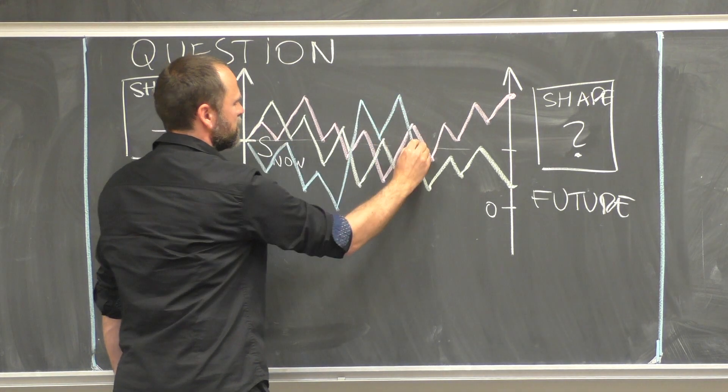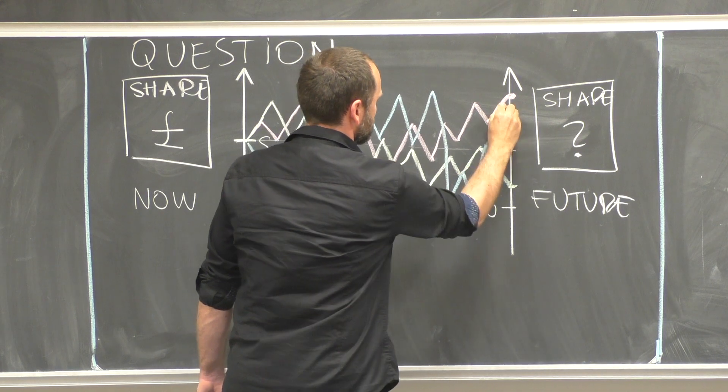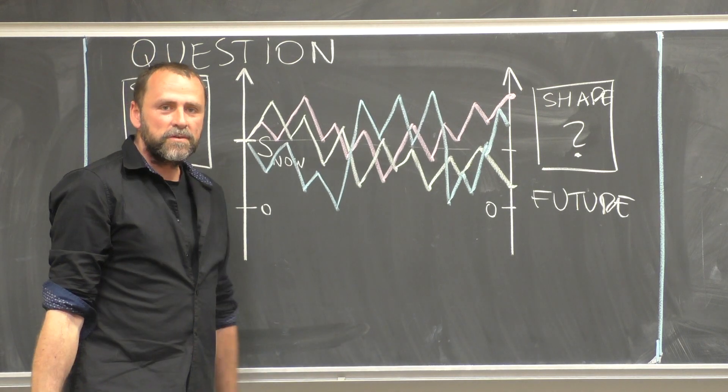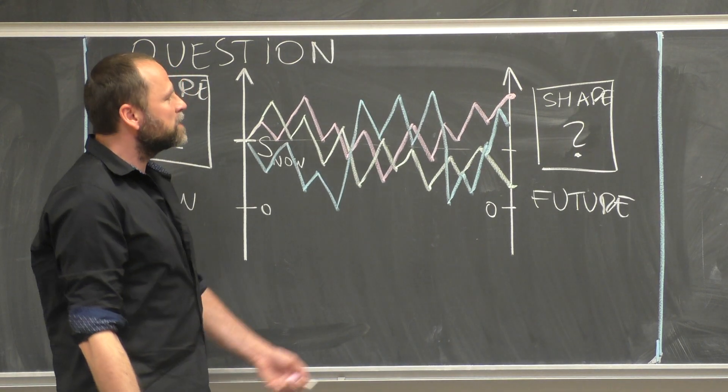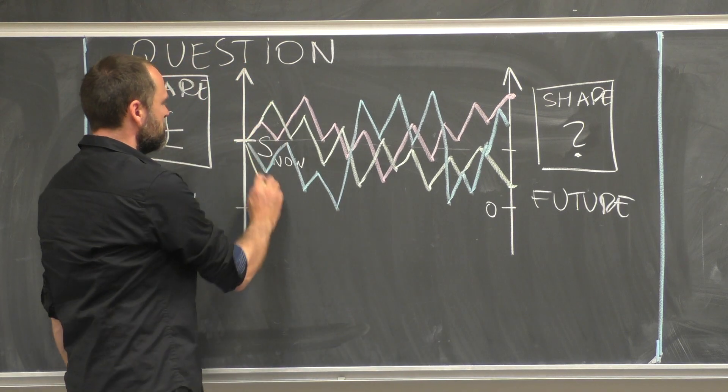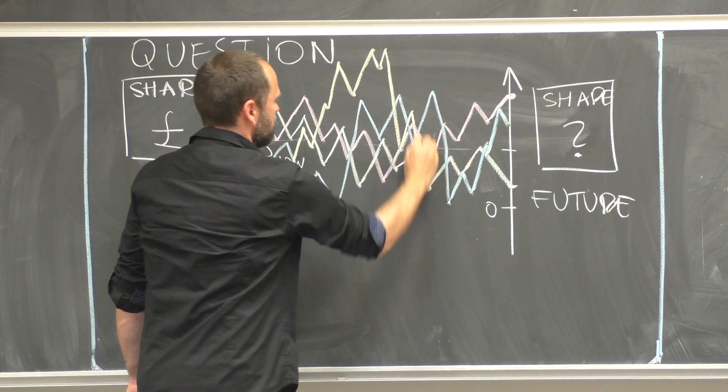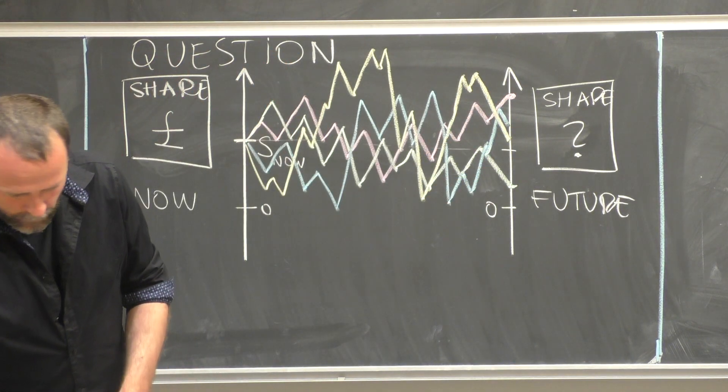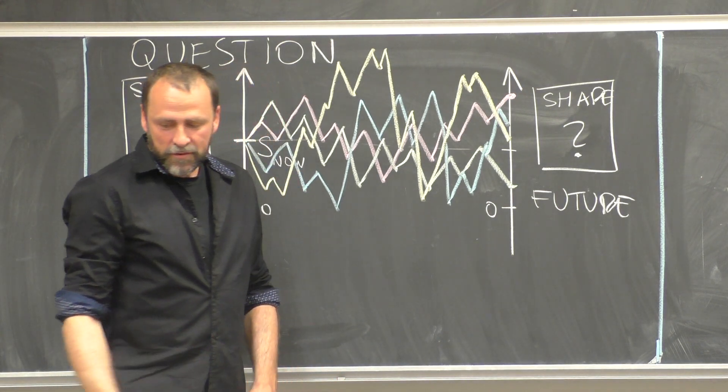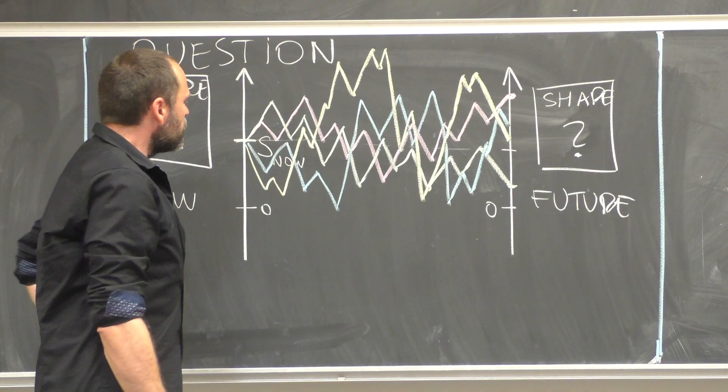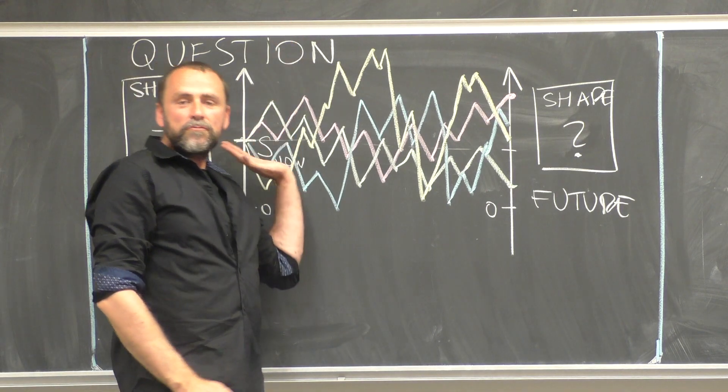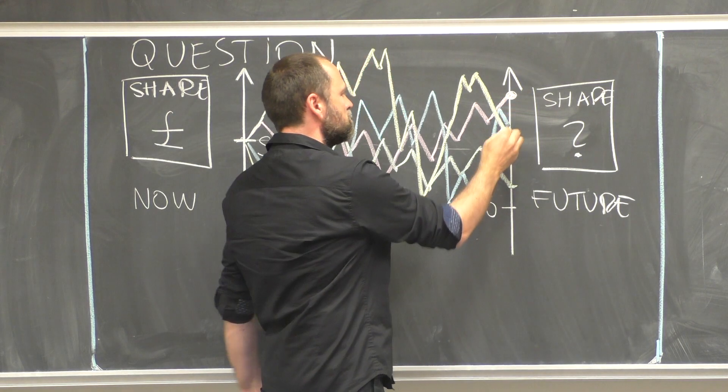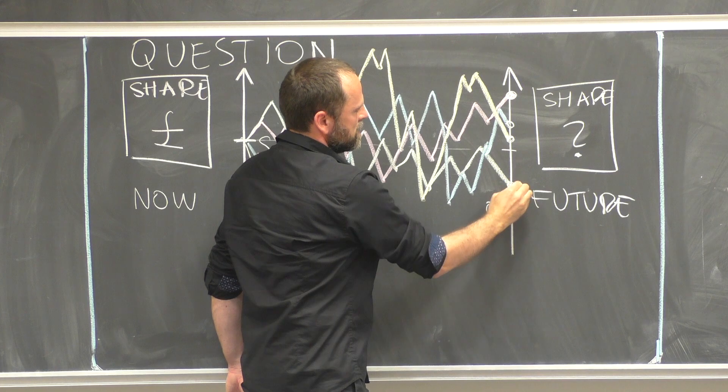We consider all possible scenarios which can happen. This example shows that the price of a share of stock is random. We don't really know what is happening in the future. The price started here. We don't really know what is happening in between. Here the price grew. Here it grew. Here it grew. And here it decreased.